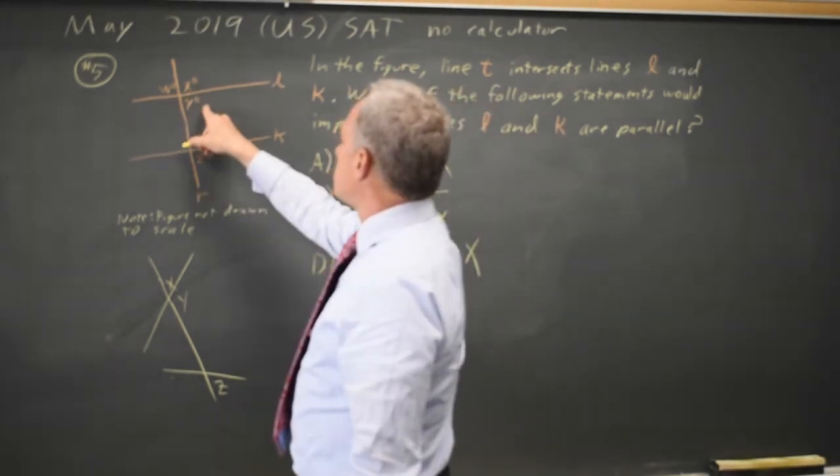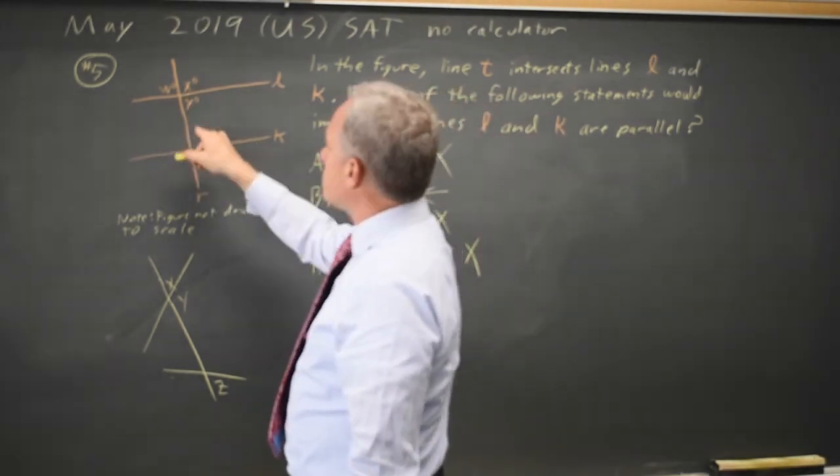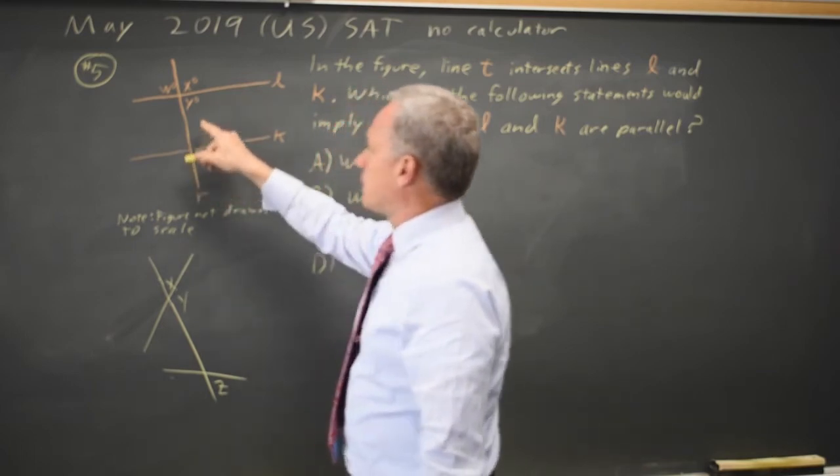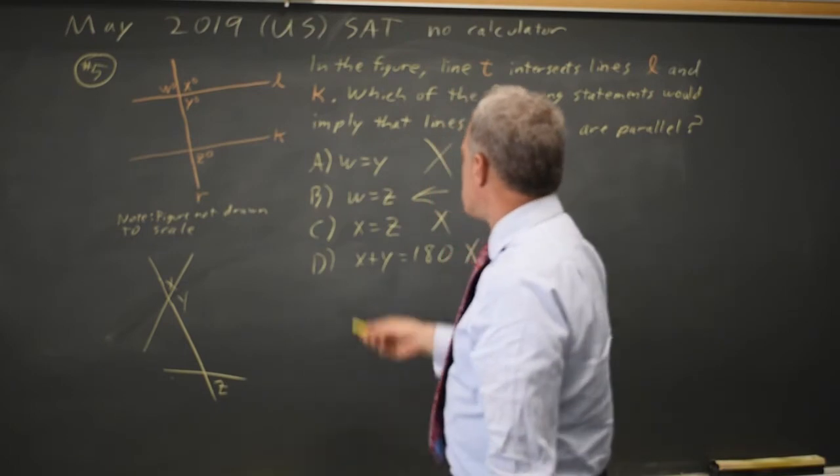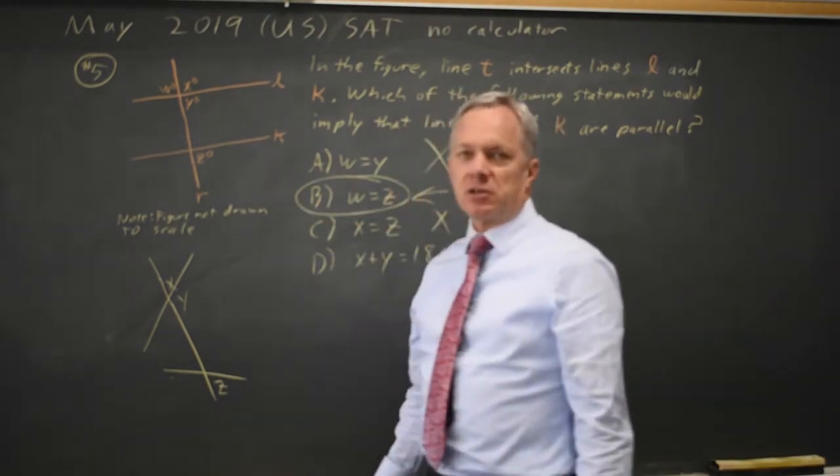Since W equals Y, if W equals Z, then Y equals Z, and if Y equals Z, that does prove that L and K are parallel, so choice B would be the correct answer.